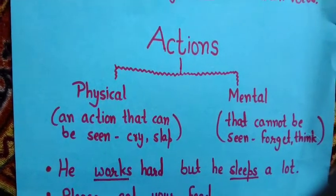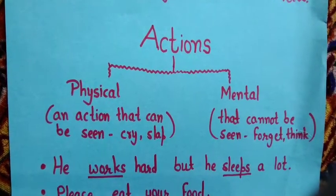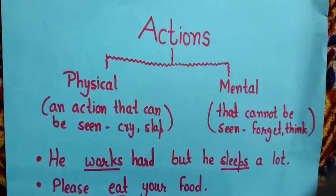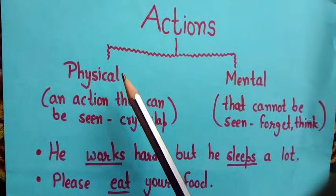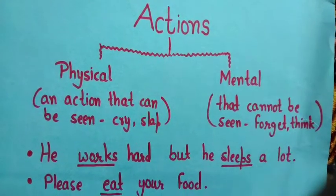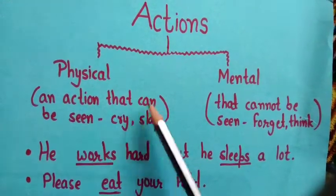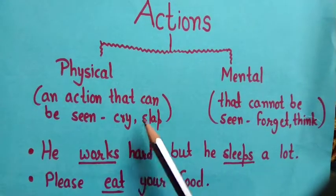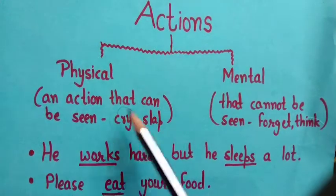Action verbs are the doing words that are called main verbs. These are of two types: physical verbs and mental actions. Physical actions are the actions that can be seen, for example, cry and slap.